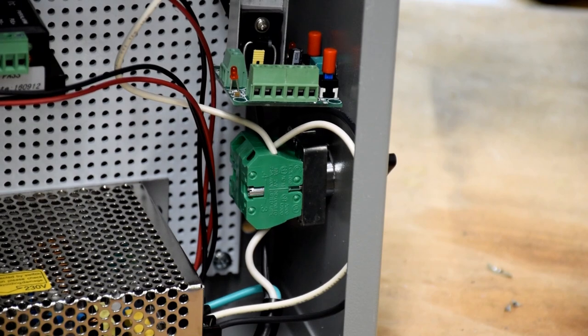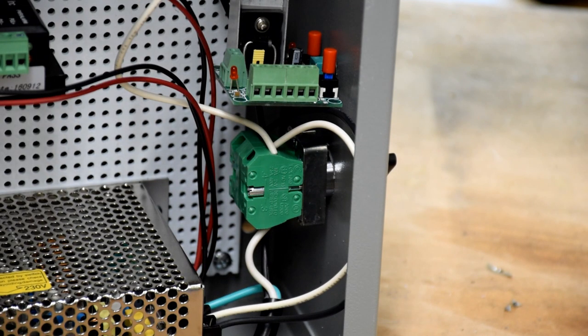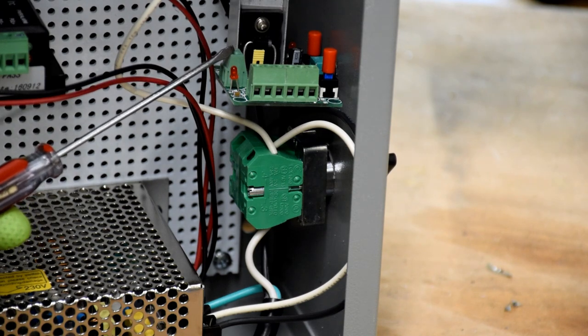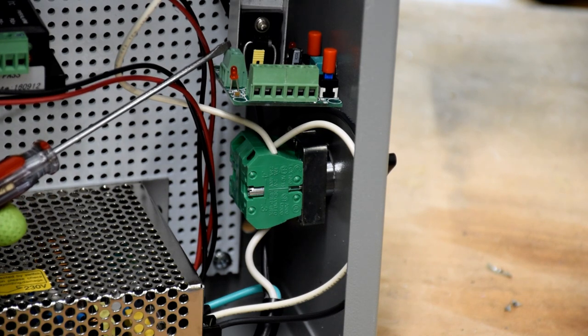Now that the speed controller is installed in the enclosure, we're going to wire it up. We're going to start with the power wiring, negative in the close terminal, and positive in the far terminal.